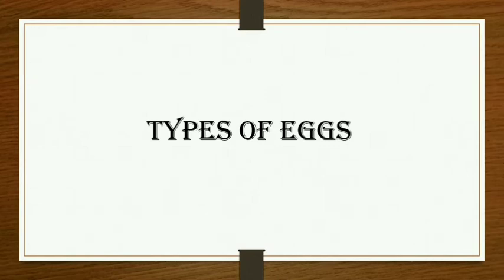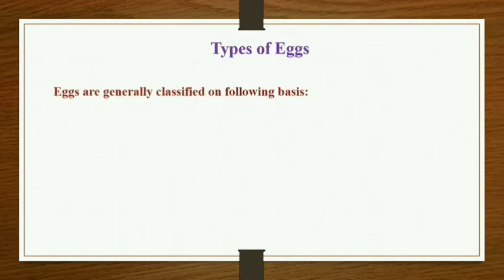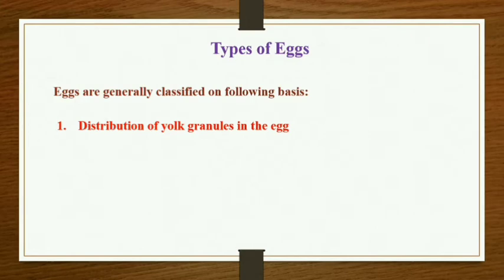The major component of yolk is a protein called vitellogenin. Now, eggs are classified on two bases. First is the distribution of yolk granules inside the egg. Second is the size of the yolk granules.